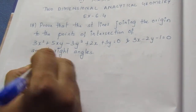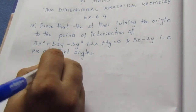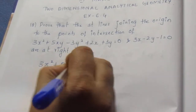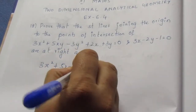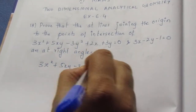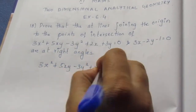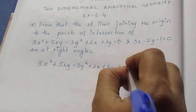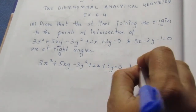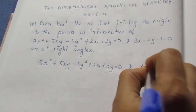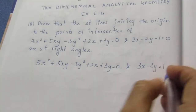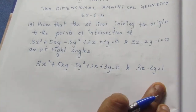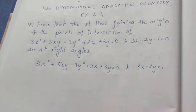The first equation is 3x² + 5xy − 3y² + 2x + 3y = 0. And from the second equation, 3x − 2y = 1. We take this and substitute it into the first equation.